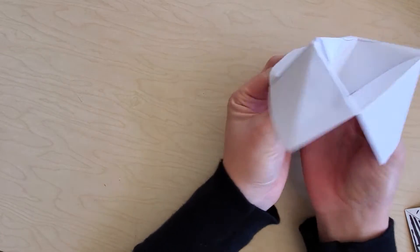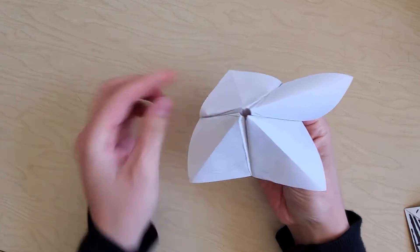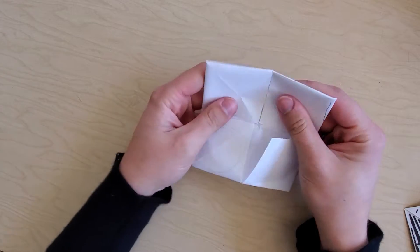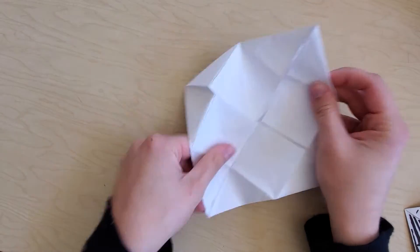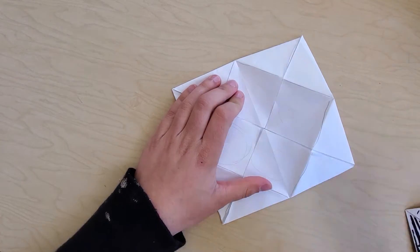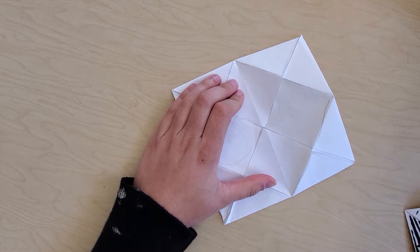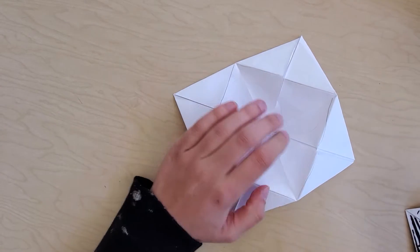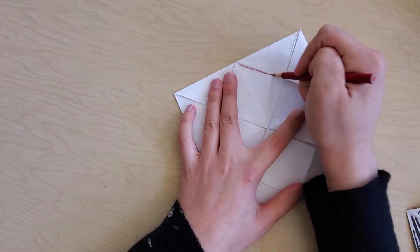You're going to start with these four on the outside and notice this center square that forms here naturally. Let me go ahead and put a line around that so you can see what I mean.